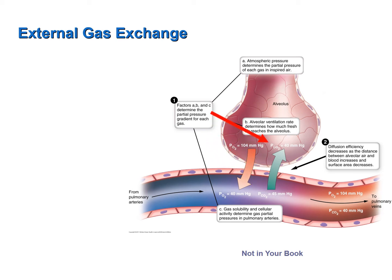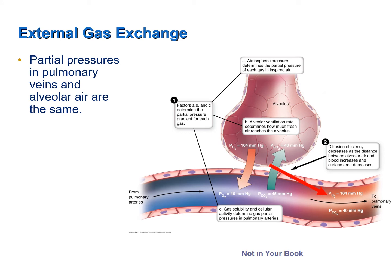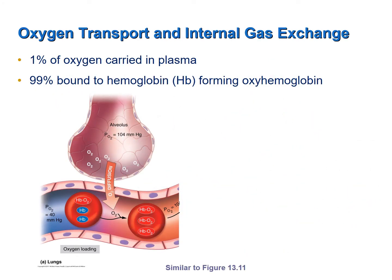The opposite gradient exists for carbon dioxide: its partial pressure is greater in blood arriving from the pulmonary capillaries than in the alveoli, so carbon dioxide diffuses out and the blood is unloaded of carbon dioxide. Both gases quickly reach equilibrium between alveolar air and pulmonary capillary blood. During external respiration, oxygen first moves into the plasma, then 99% of oxygen moves into red blood cells where it binds to hemoglobin, forming oxyhemoglobin.